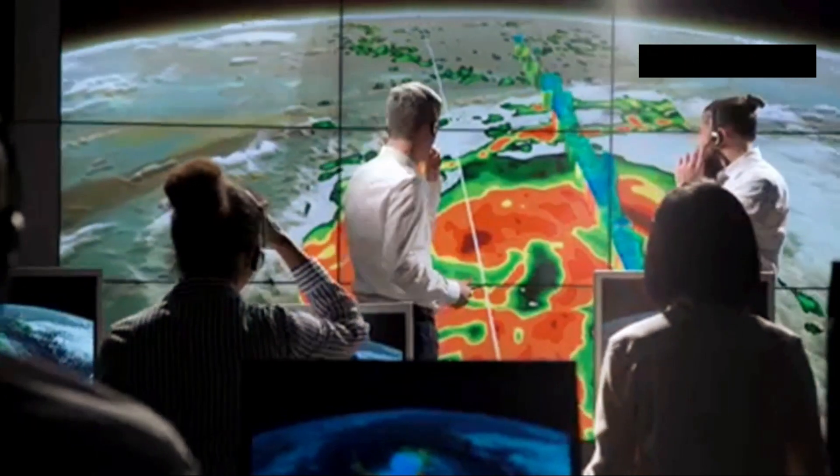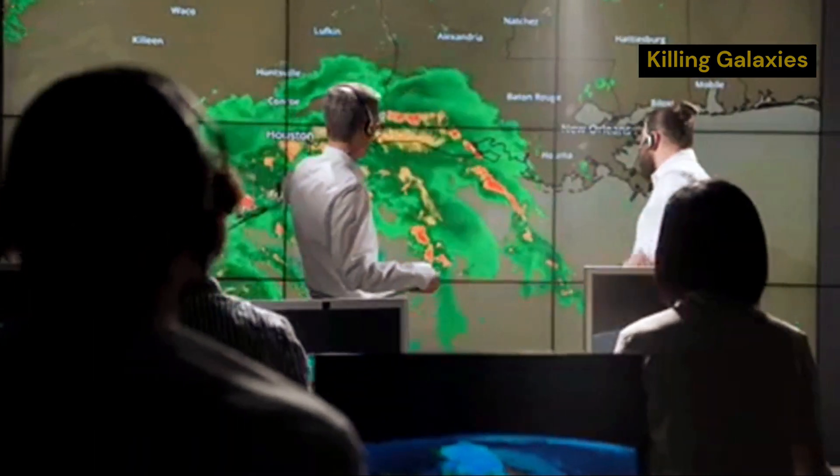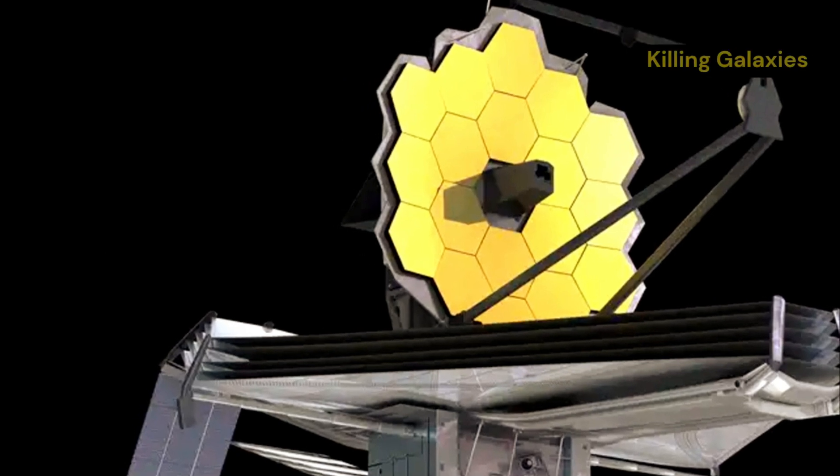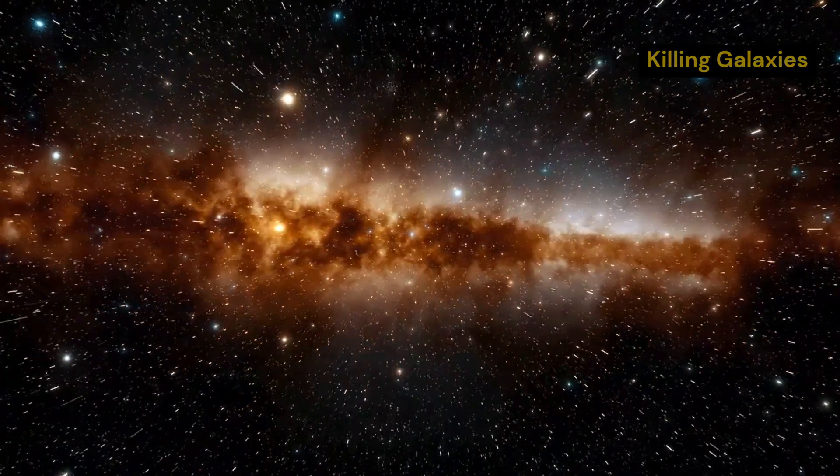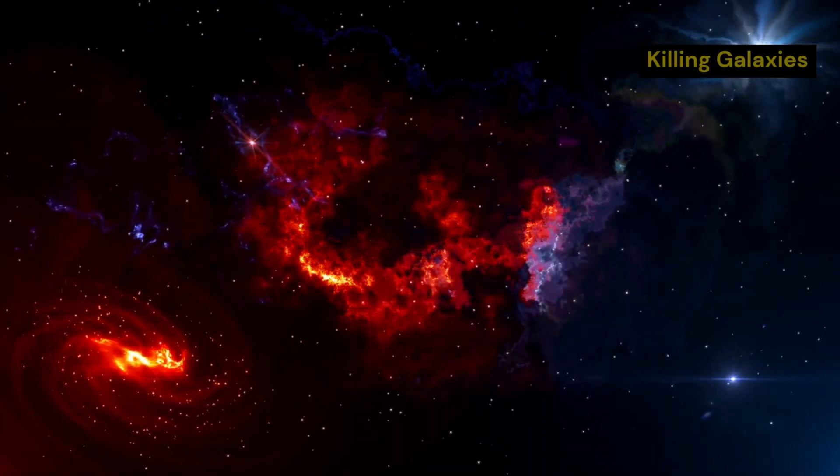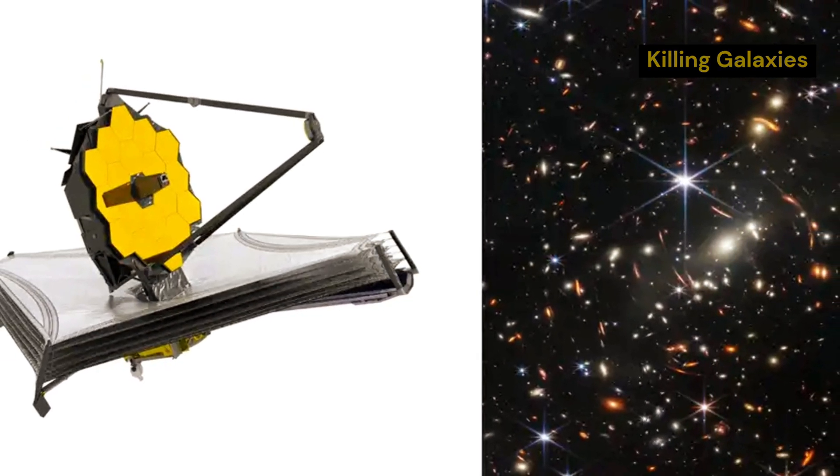The data collected will help refine our understanding of quasar feedback and its role in shaping the evolution of galaxies throughout cosmic time. The JWST will also be used to search for other distant quasars and galaxies in the early universe. By studying these objects, astronomers hope to learn more about the conditions that prevailed in the early universe and how the first galaxies formed.